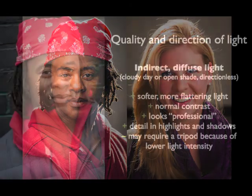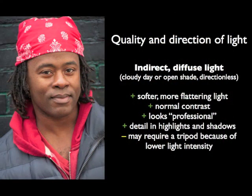Now let's move to a different lighting pattern — we're outside but no longer under direct sunlight; we're working with indirect diffuse light. Diffuse light is soft — maybe cloudy or open shade — it doesn't have a lot of direction; the light appears to come from everywhere and everything is lit pretty evenly. The result of using indirect diffuse light is you get softer more flattering light: no hard shadows, no washed-out highlights, just a beautiful soft glowing quality. Contrast is easily controlled, you get good detail in both shadows and highlights — the blacks aren't too black, the whites aren't too white.